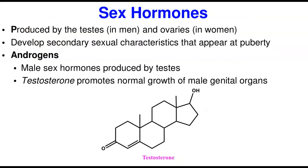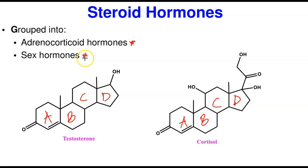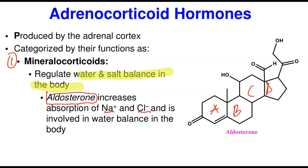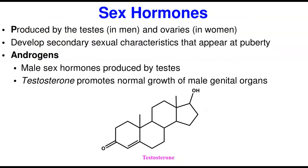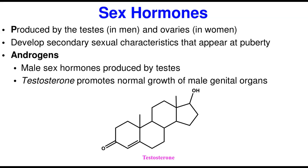We divided steroid hormones into two main groups: adrenocorticoids — which include mineralocorticoids and glucocorticoids — and sex hormones. The sex hormones are produced in the testis in men and in the ovaries in females. Their basic role is to play an important role in the secondary sexual characteristics that appear at puberty.